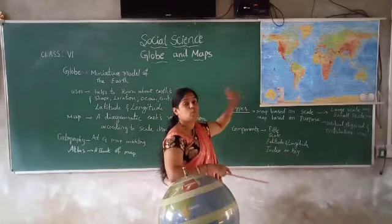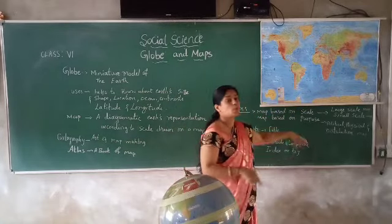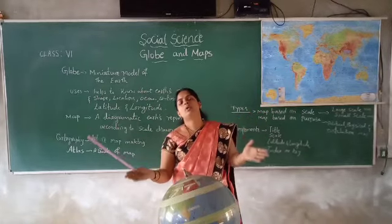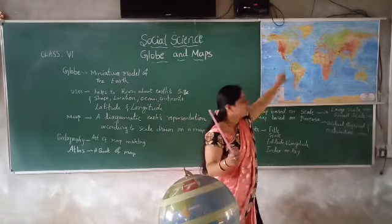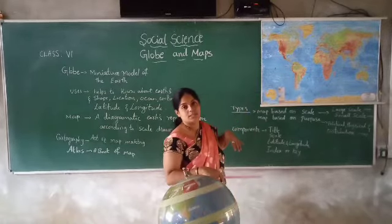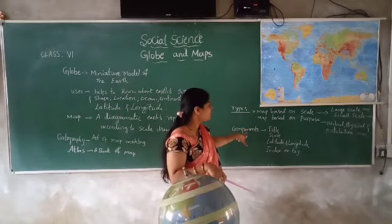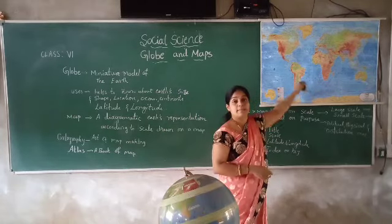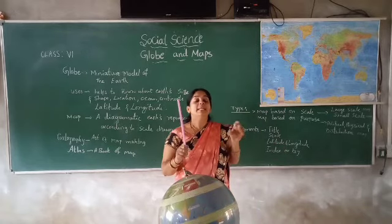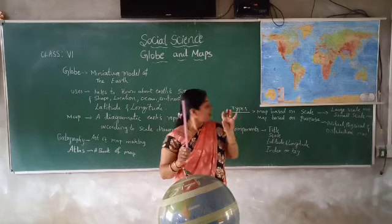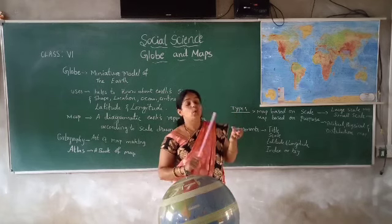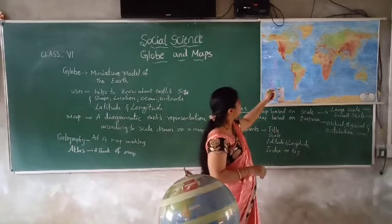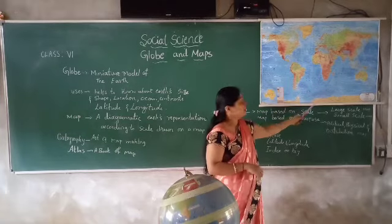This map is divided into two types: one is map based on the scale and map based on the purpose. Based on the scale, India's land boundaries — how much there is — that much we will take the scale and draw on the map. And map based on purpose — for example, political map and physical map. Political map means we are learning countries, locations, cities, towns, and boundaries. And in the physical map, water bodies, continents, small lakes, and mountains we can see.